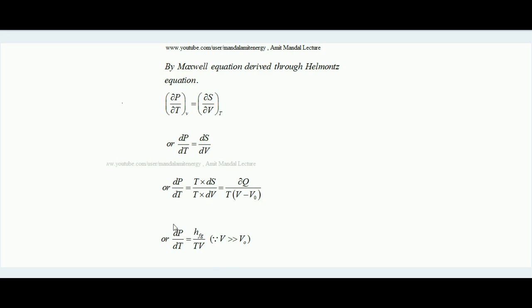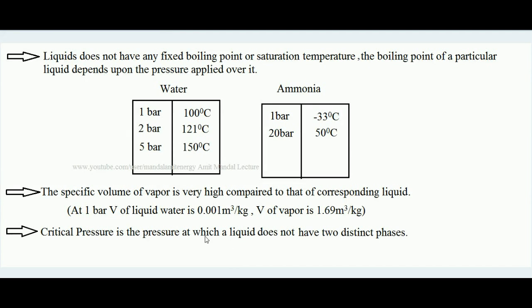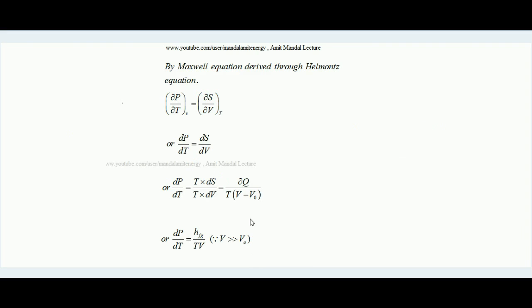The formula becomes dP/dT = HFG / (T·V), where we disregard Vf because the specific volume of liquid is very much less than the specific volume of the corresponding vapor — as established earlier, the difference is about 1600 times. So Vf is negligible compared to Vg, and the formula simplifies to dP/dT = HFG / (T·V), where V is the specific volume of vapor.